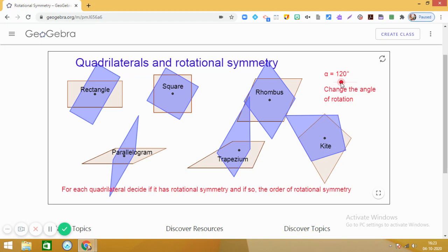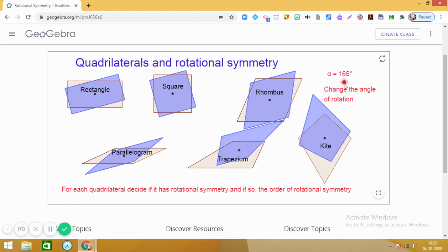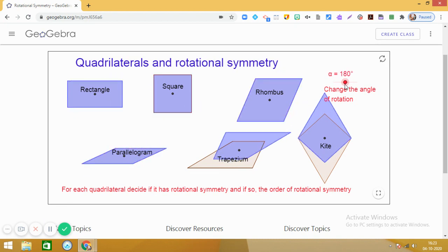In between also, just keep a watch. Are you getting the same shape somewhere? No, we are not. So, it's 180 degrees and interestingly, you will notice that we are getting the same rectangle and square also.